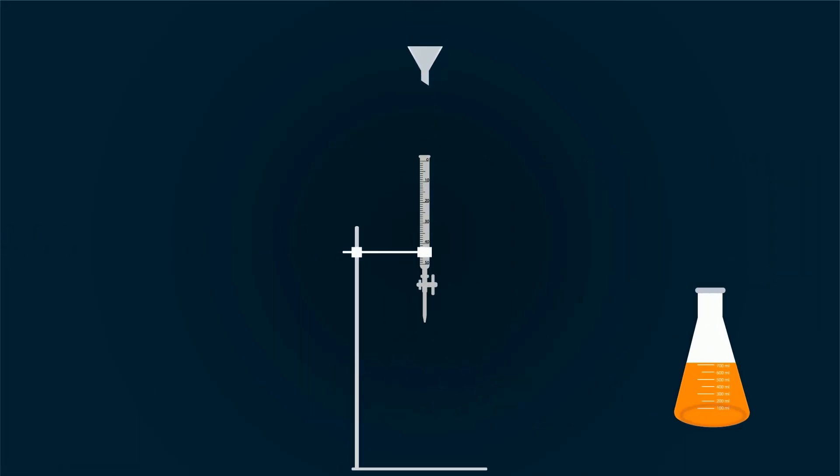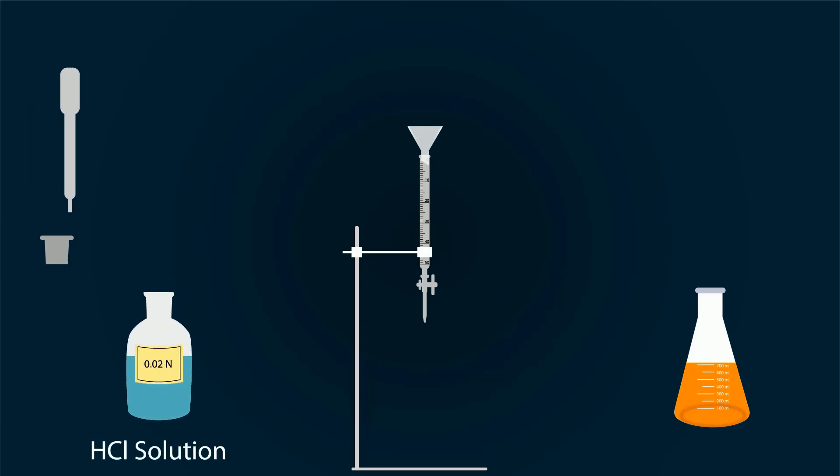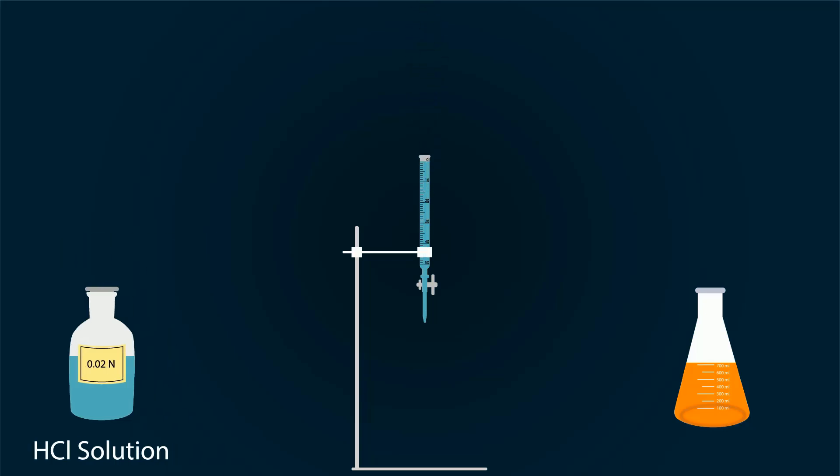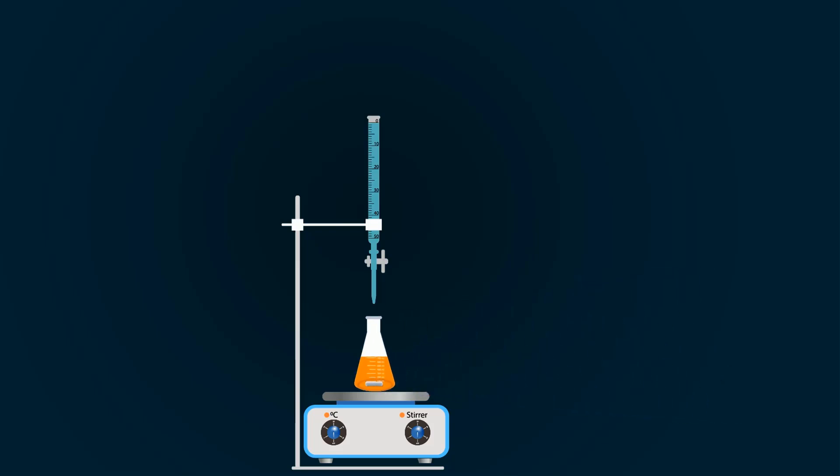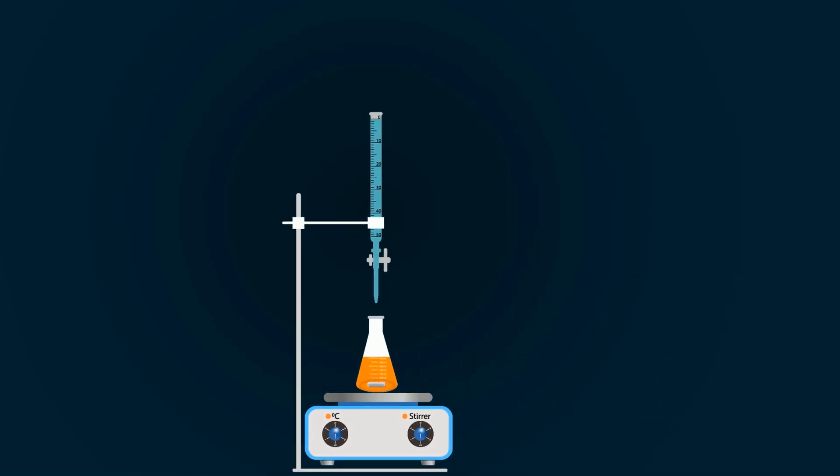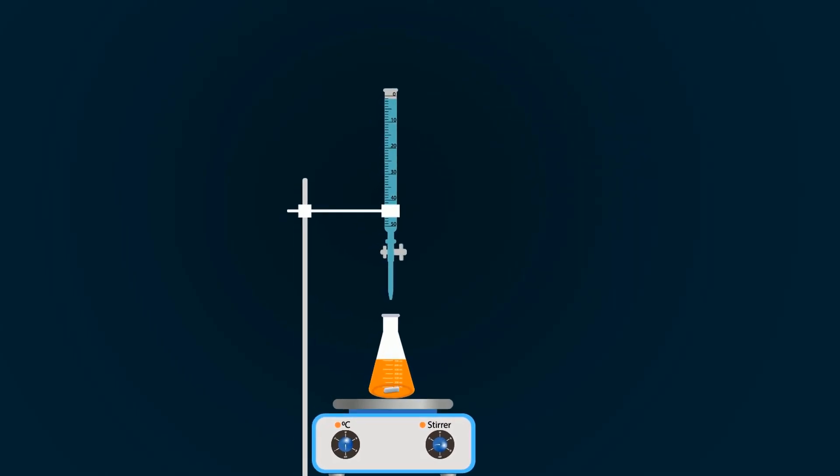For titration, take a stand and adjust burette on it. Don't forget to add funnel. Fill this burette with 0.02 normal HCl solution up to the 0 point. Adjust the magnetic stirrer below the burette. Add magnetic bar into the conical flask. Put the conical flask on magnetic stirrer and turn it on for homogenous mixing. Start adding HCl solution dropwise.